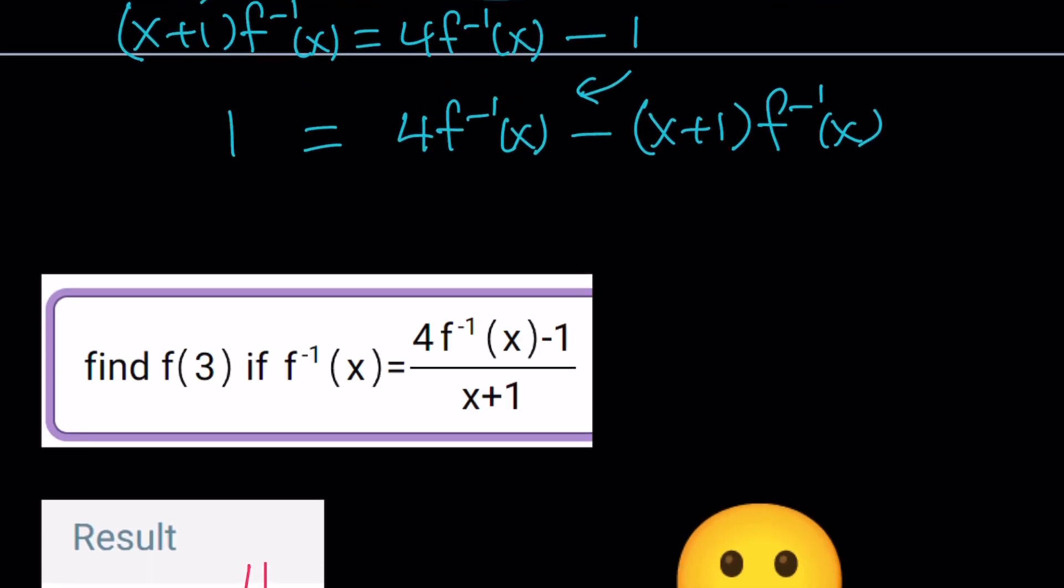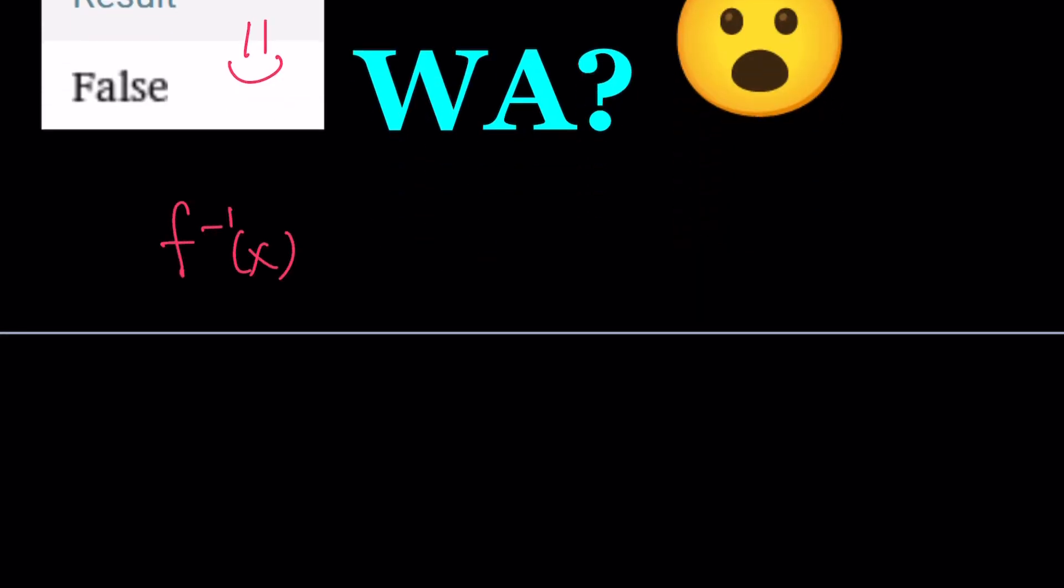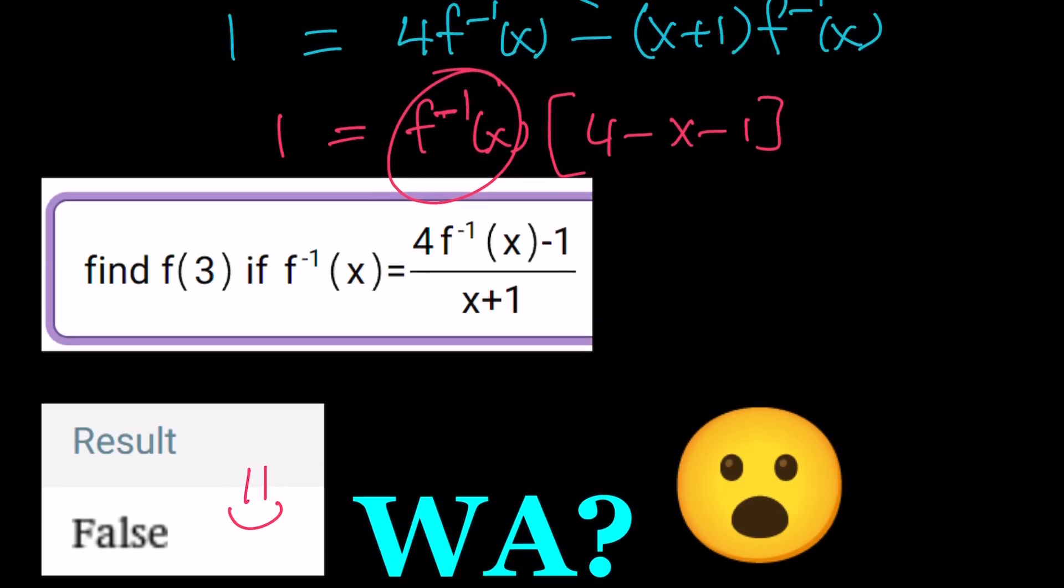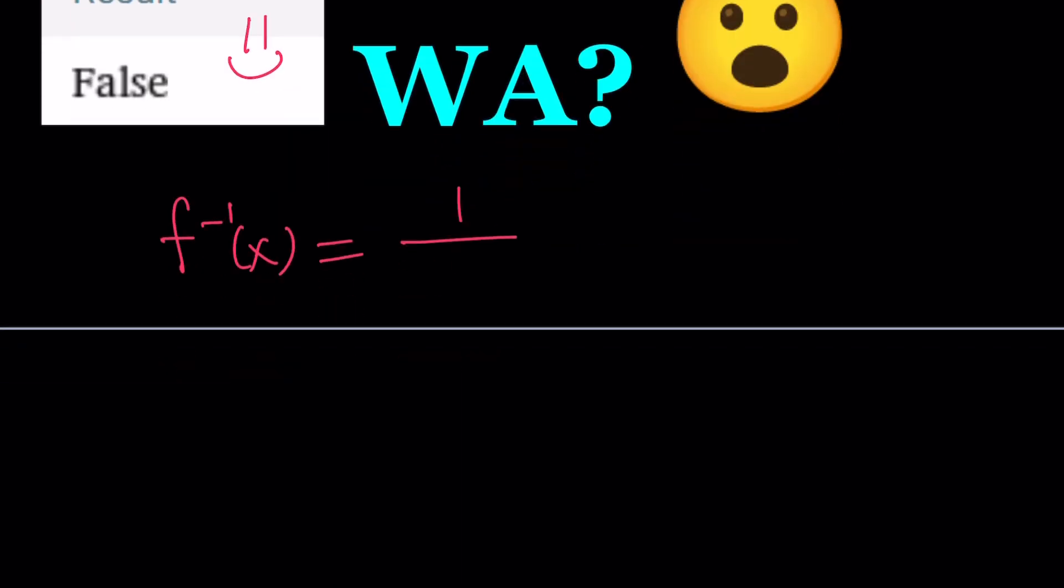Anyway, so let's go ahead and take out f inverse. And that's going to give us 4 minus x minus 1 equals 1. And we can go ahead and solve for f inverse. f inverse of x is going to be 1 over, remember from here we get 3 minus x, and that's going to be f inverse.